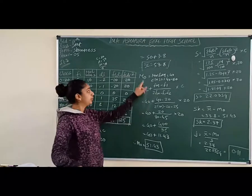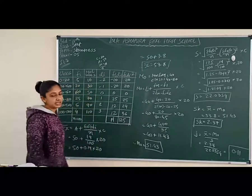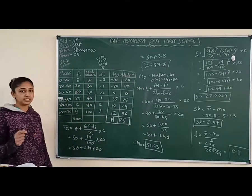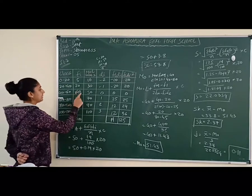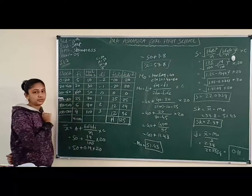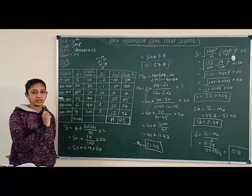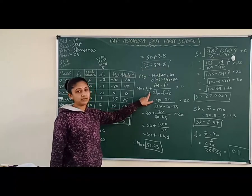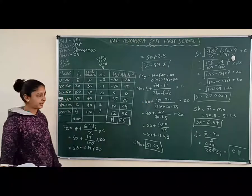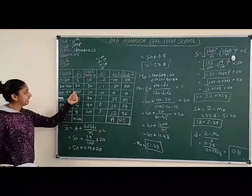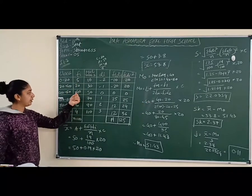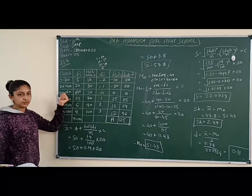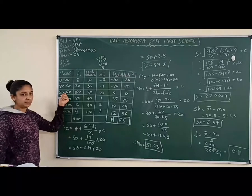Now find the mode. For a continuous frequency distribution, we select the class with the maximum frequency. The highest frequency is 40, corresponding to the class 40–60, so this modal class is selected.